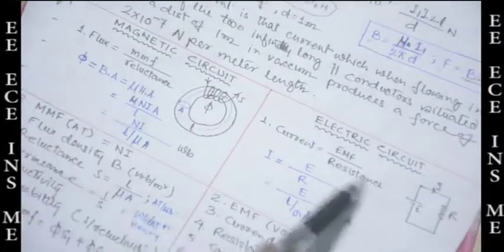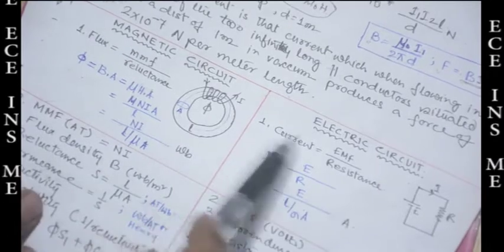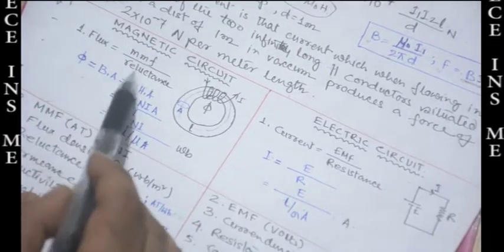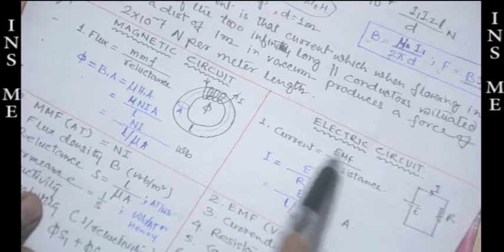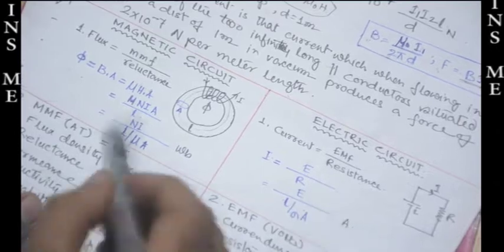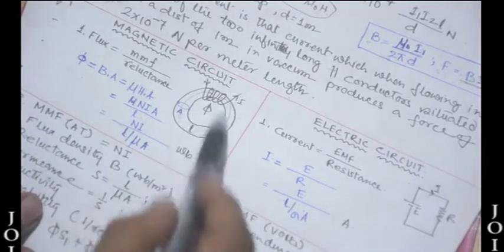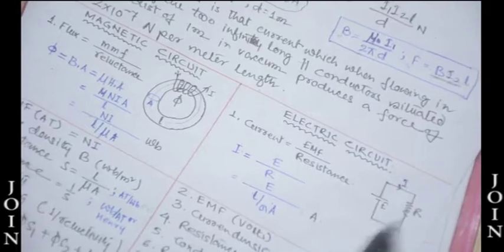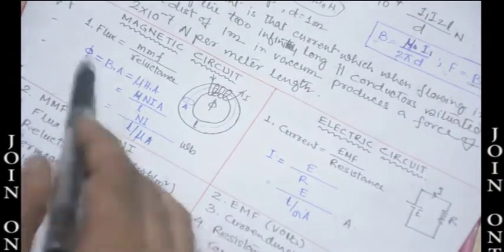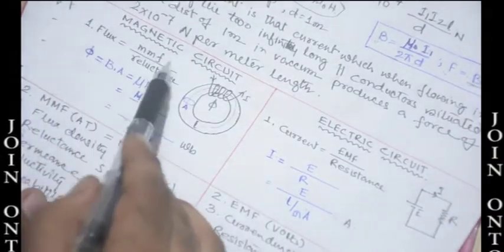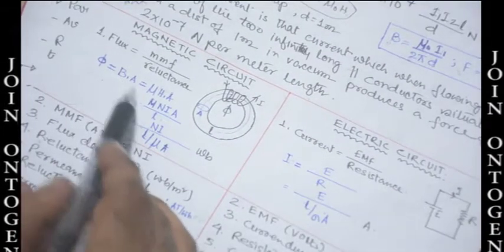Magnetic circuits and electric circuits resemble each other. Flux equals MMF divided by reluctance, and current equals EMF divided by resistance. In a magnetic circuit, flux flows; in an electric circuit, it is current. So flux corresponds to current, EMF to MMF, and reluctance to resistance. Phi = B × A.